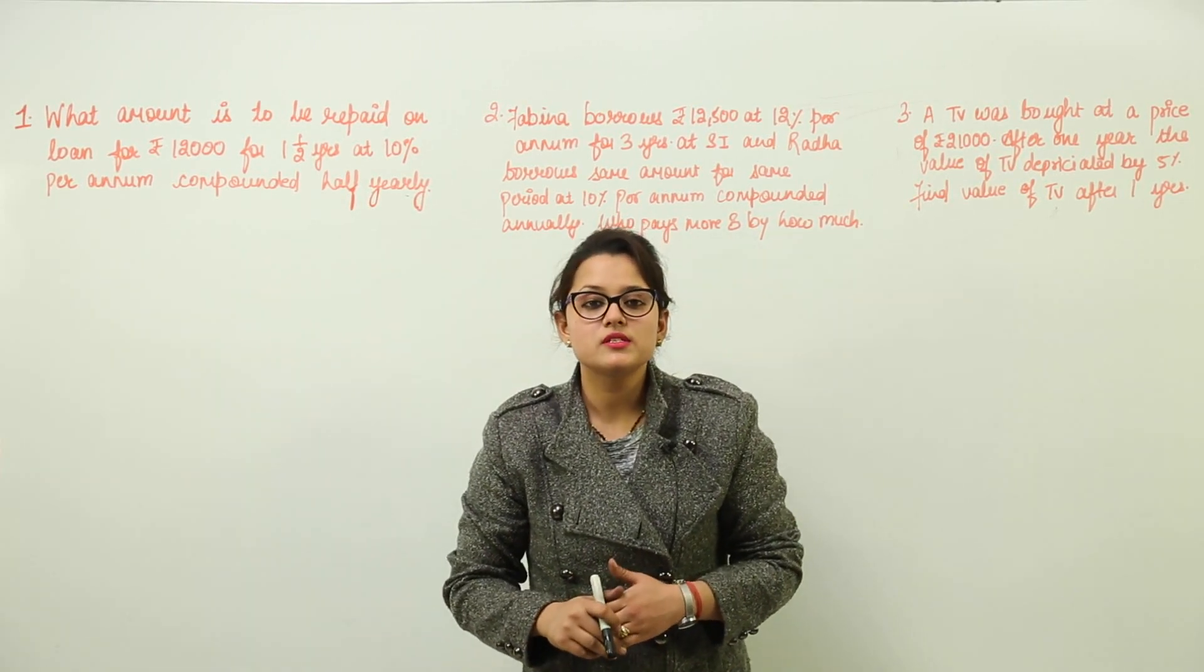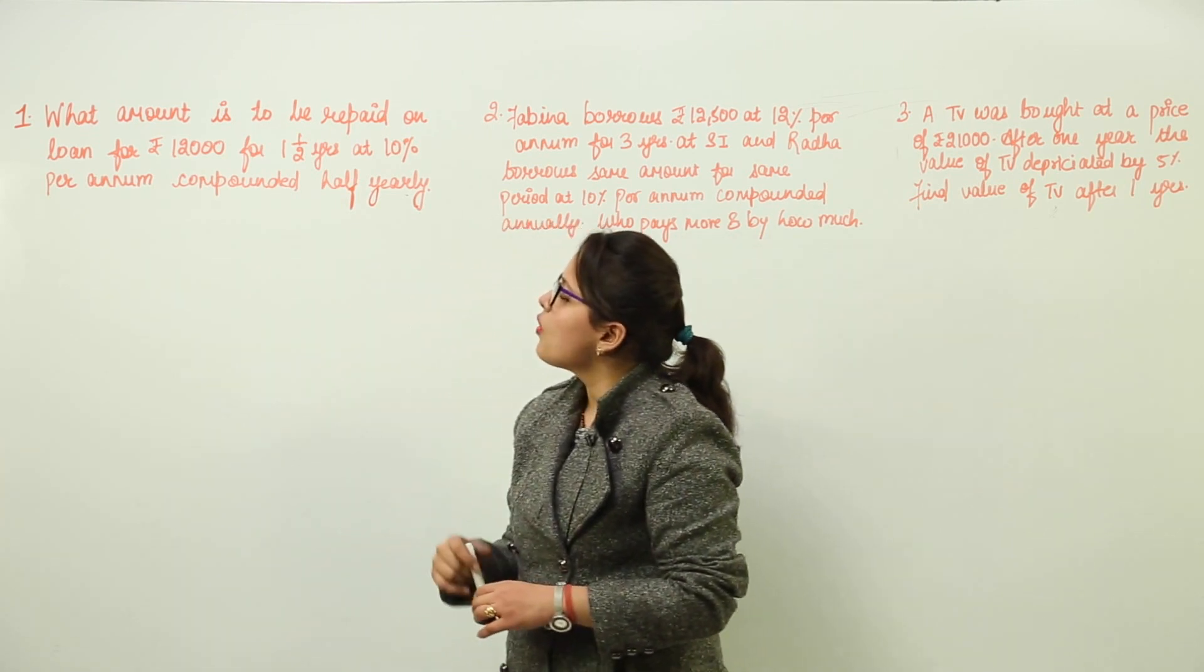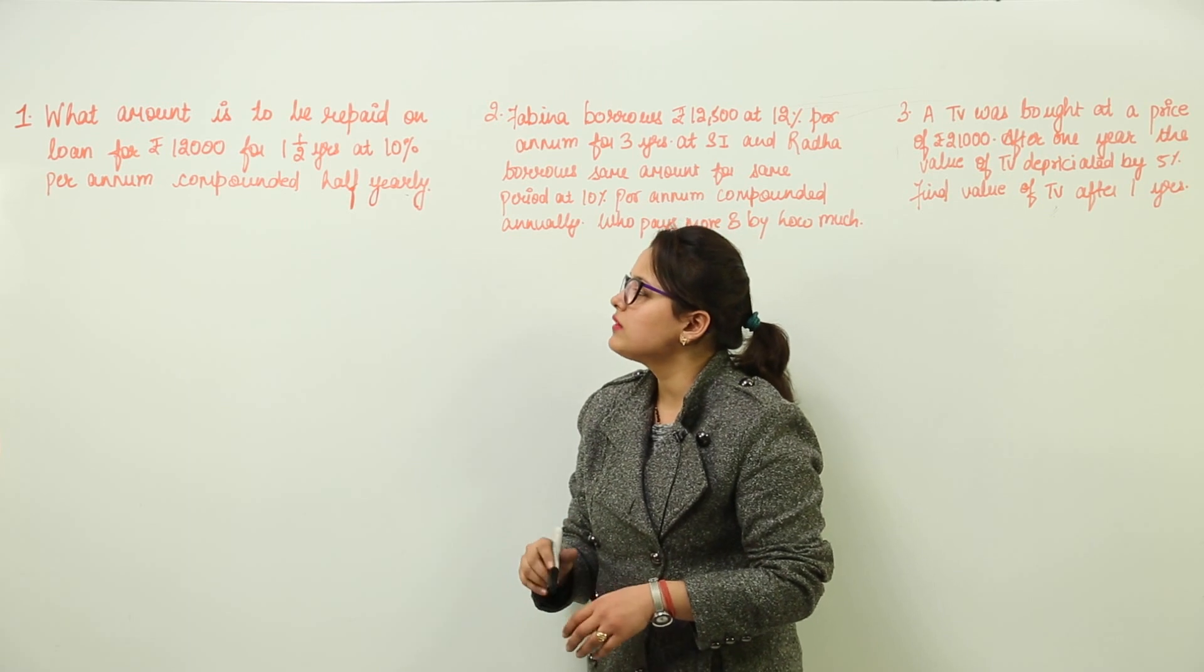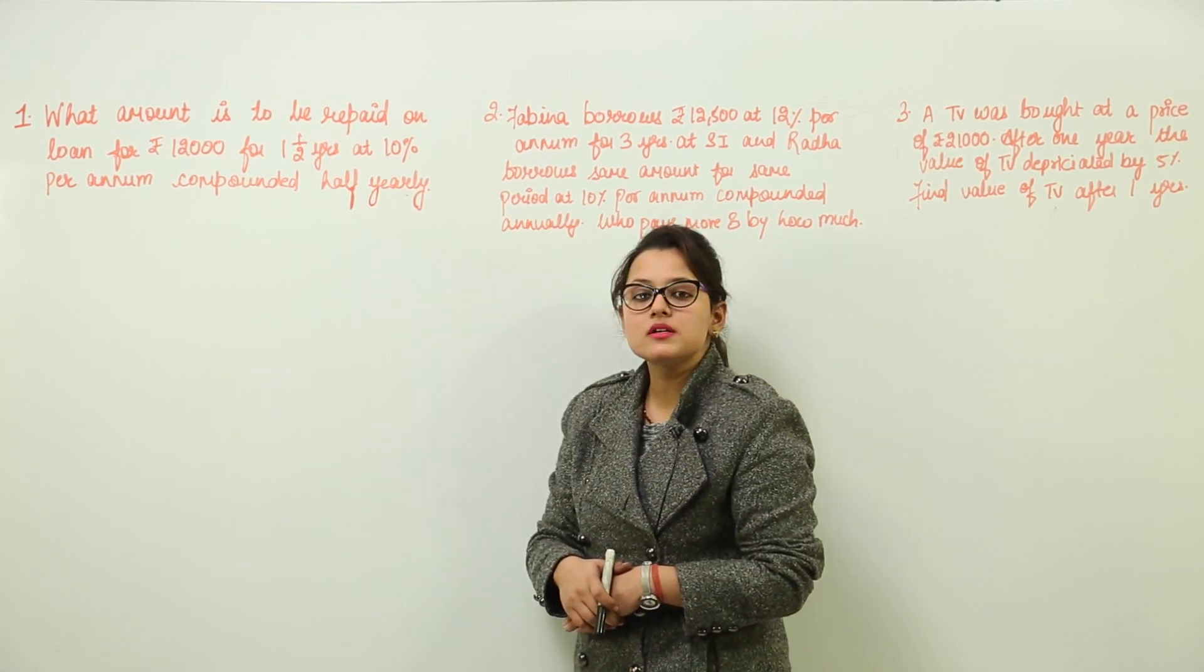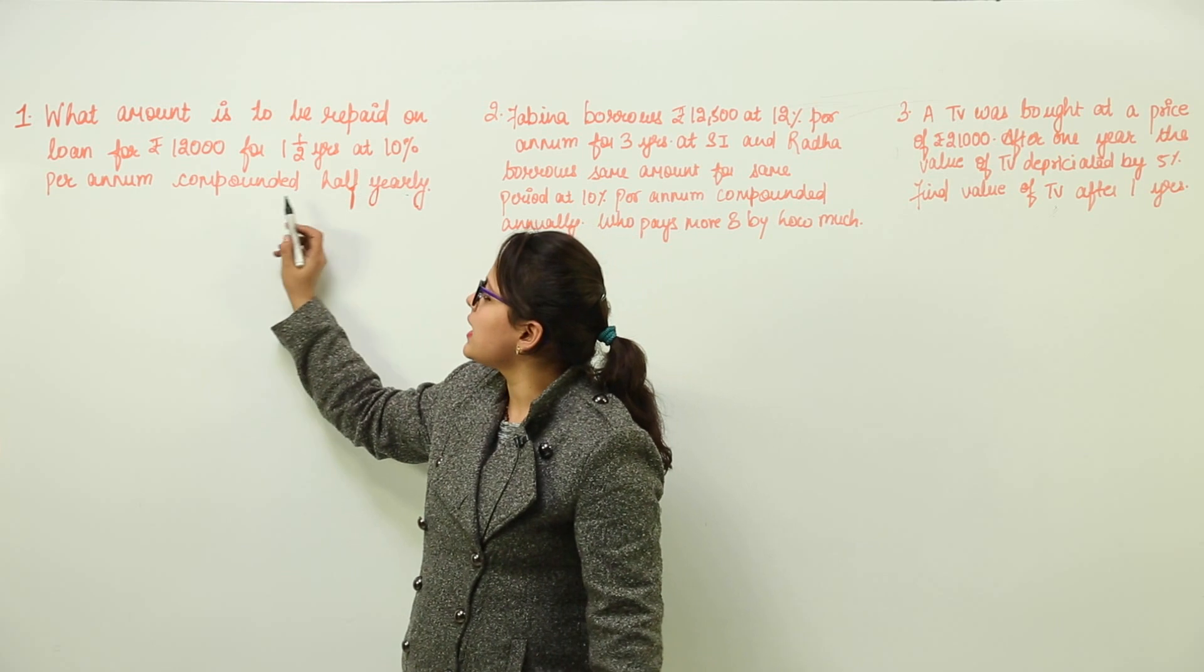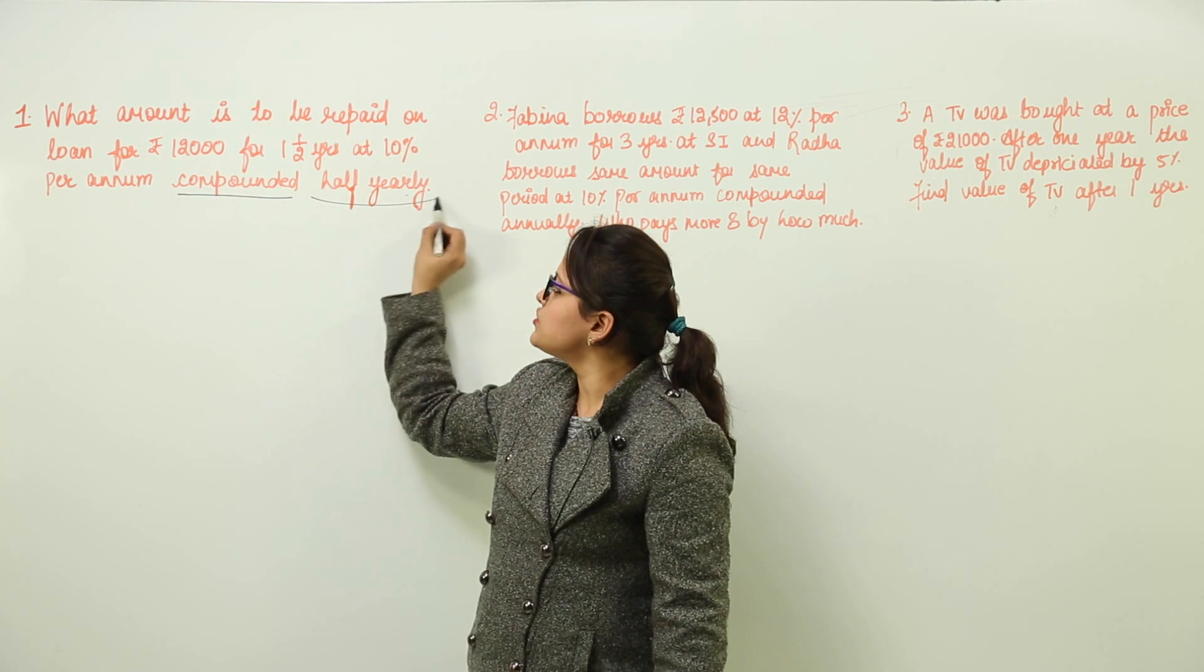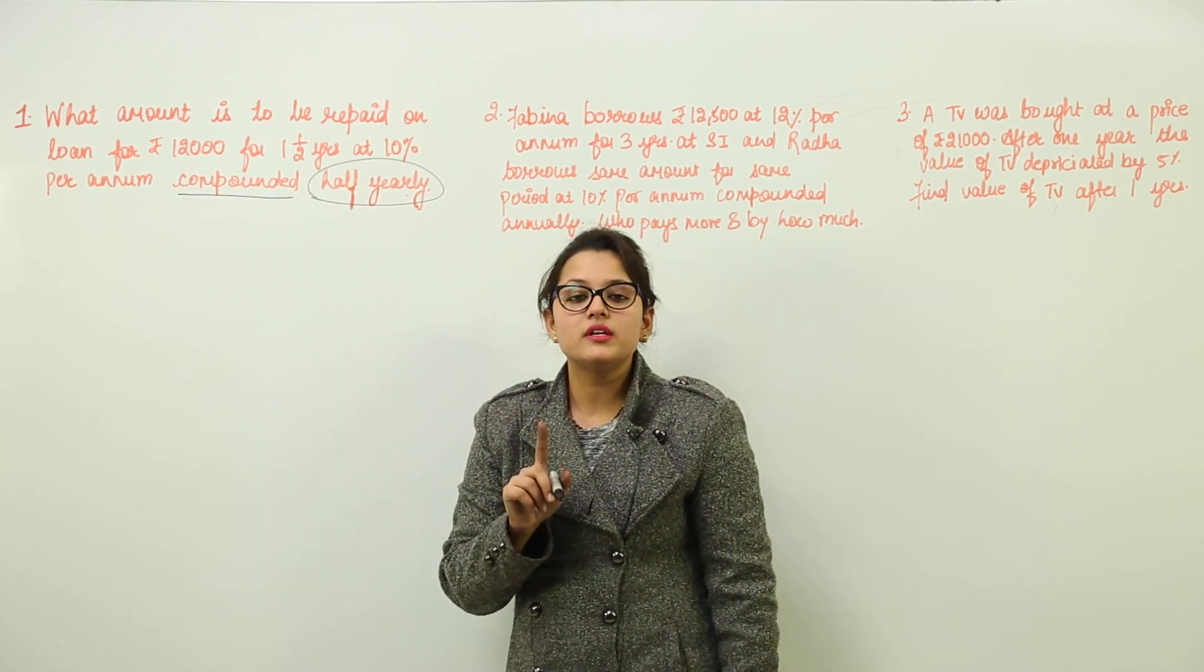Let's move on and solve some questions based on compound interest and simple interest. The first question is, what amount is to be repaid on loan for Rs. 12,000 for 1.5 years at 10% per annum compounded half yearly?